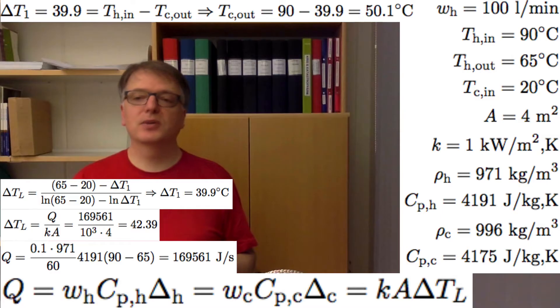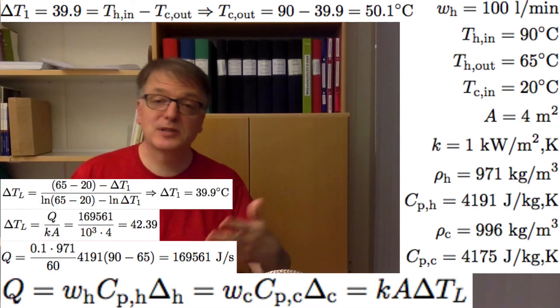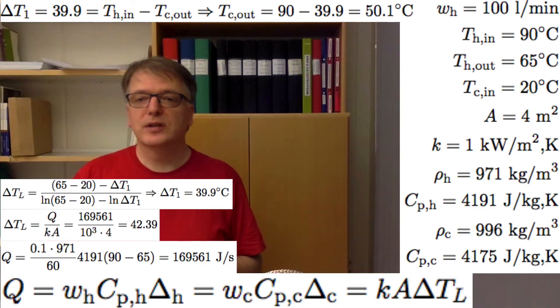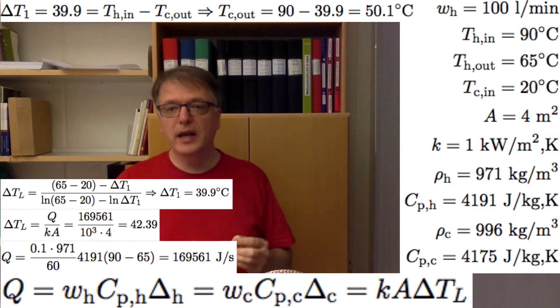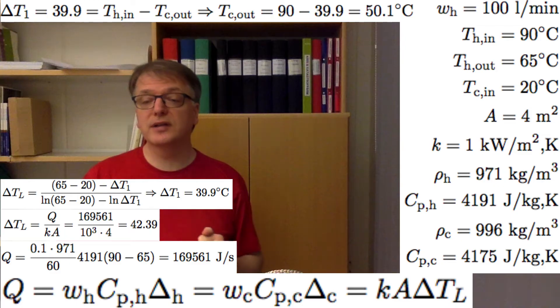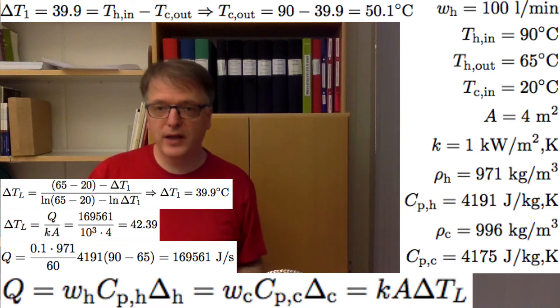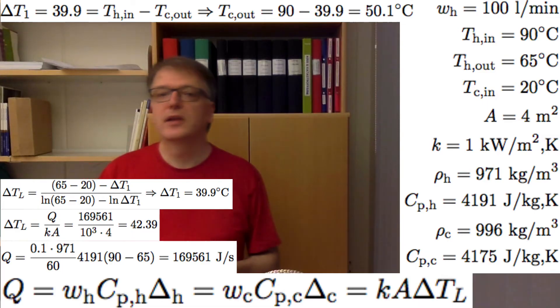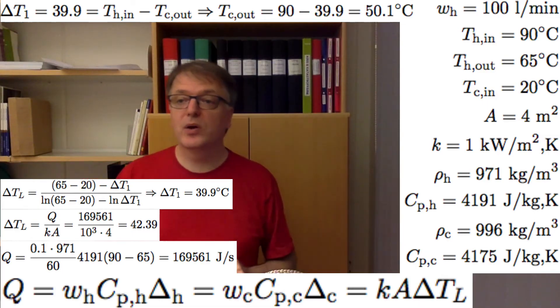And that becomes 39.9 degrees Celsius. We keep some extra digits here just in case so we don't run into numerical problems. ΔT₁, the temperature difference between the two flows on the other side, that's 90 for the hot flow. We calculate that here: ΔT₁ was 39.9, so we get 90 minus 39.9 and that's 50.1 degrees Celsius.